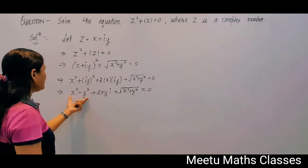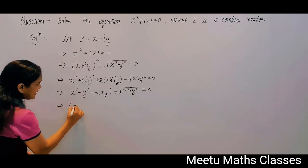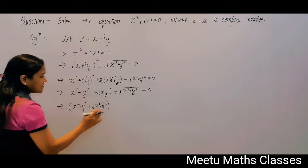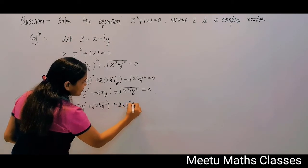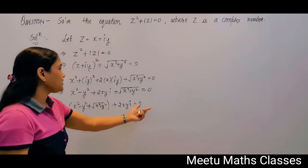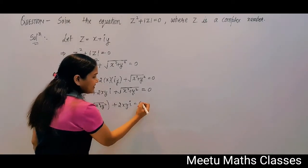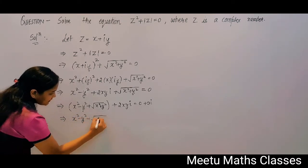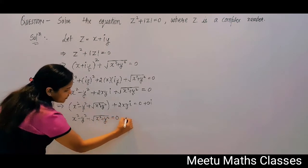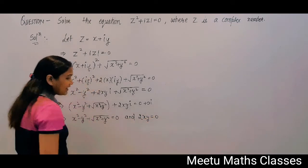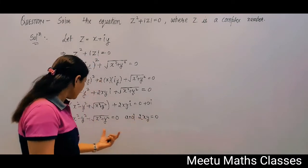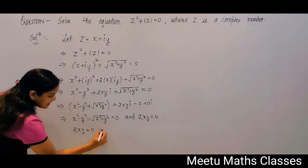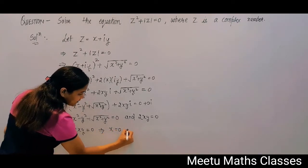This is a complex number. The real part is x² − y² + √(x² + y²), and the imaginary part is 2xy. So: (x² − y² + √(x² + y²)) + 2xy·i = 0. Since 0 = 0 + 0i, equating real and imaginary parts to 0, we get 2xy = 0, which implies either x = 0 or y = 0.